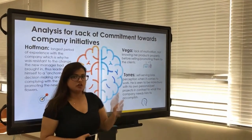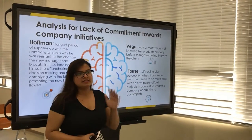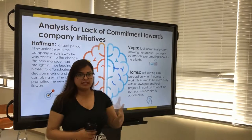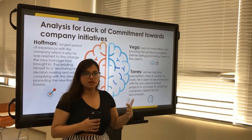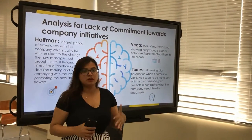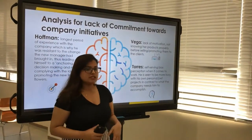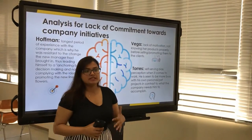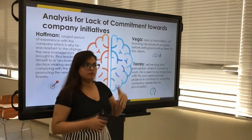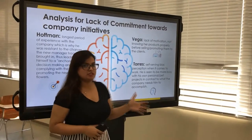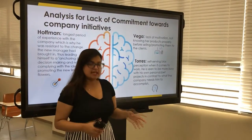Vega had a lack of motivation, which led her to not knowing her products well enough to present them properly to clients. By not knowing her products, she appeared incompetent, making the company look incompetent in front of clients. The last employee, Torres, had a self-serving bias — he was too focused on his own tech project and did not have enough interest in the company's bigger projects, contributing to the company's overall failure.